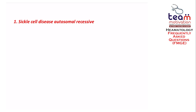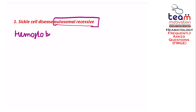The first question is the mode of inheritance in sickle cell disease, and the mode of inheritance in sickle cell disease is autosomal recessive. Here we should also revise the mode of inheritance of other anemias. Hemoglobin C is again autosomal recessive.